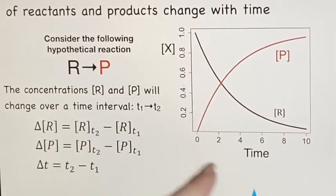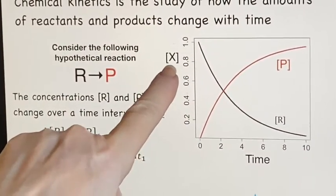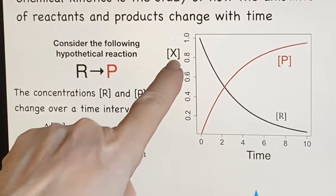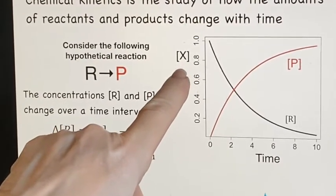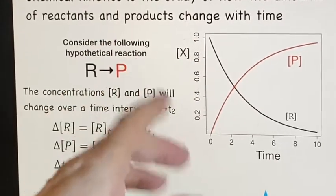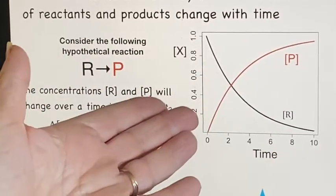First of all, we'll do a little graph. Here is concentration of something. The brackets mean concentration of. In this case, concentration of X means either reactant or product. We've graphed both on the same graph.